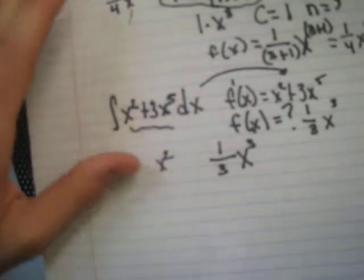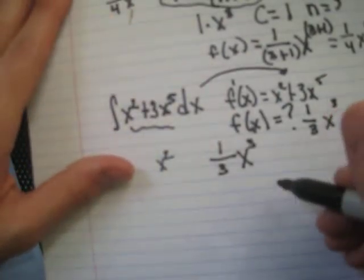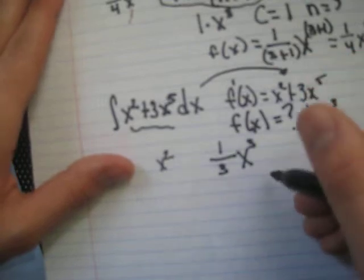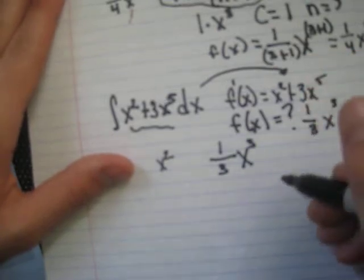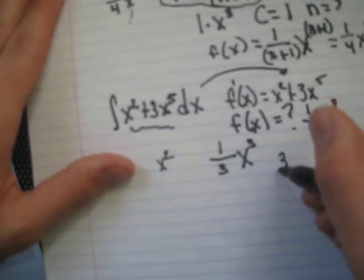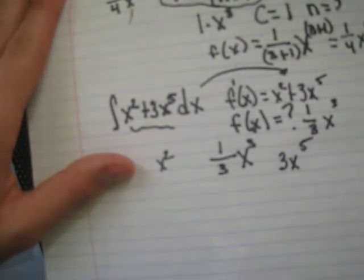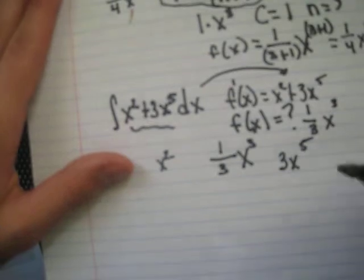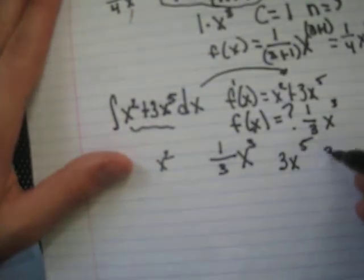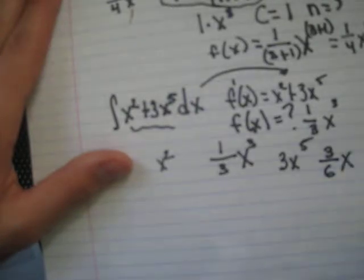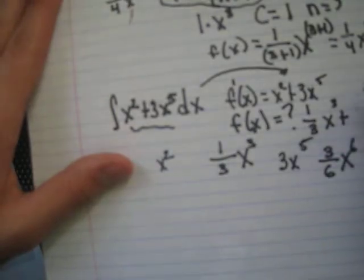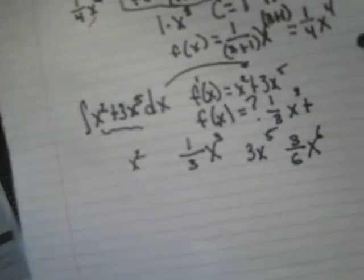Our second term is going to be if our derivative of the second term is 3x to the fifth, then we add one to the exponent to the sixth, divide the coefficient by that, x, and then we add one again to the sixth. So we add that to our original function.